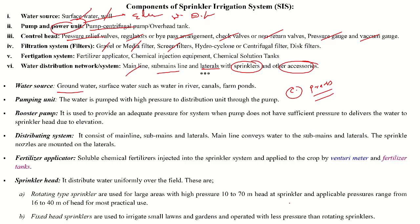The booster pump creates additional pressure for the sprinkler system so that sufficient water comes from the sprinkler. The distribution system consists of the mainline, sub-main, and laterals. The mainline conveys water to the sub-main, and from the sub-main to the laterals, and from the laterals to the nozzle sprinklers.